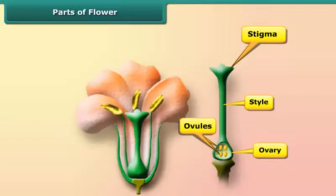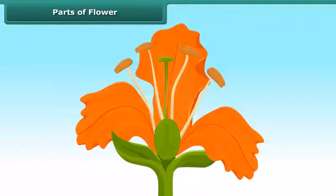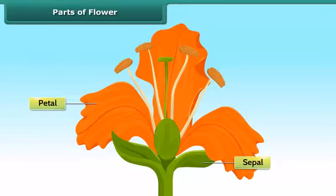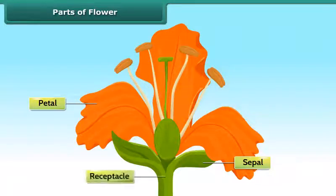Other important parts of the flower are the petals and sepals. The petal is the colored part of a flower. The sepals are the green petal-like parts at the base of the flower. The receptacle is the part of the flower stalk where the parts of the flower are attached.